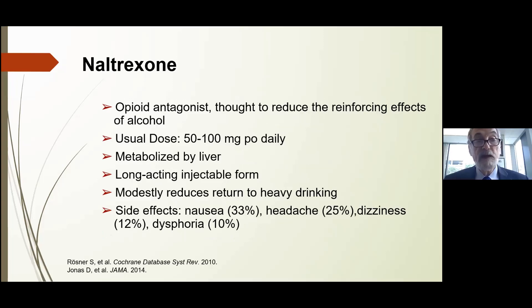Naltrexone is the third FDA-approved medication for alcohol use disorder — an opioid antagonist that reduces the reinforcing effects of alcohol. The usual dose is 50 to 100 mg per day. It's metabolized by the liver, but can still be used unless the patient has end-stage liver disease. There is a long-acting injectable form given once a month. There is modest reduction in return to heavy drinking. Side effects include nausea, headache, dizziness, and dysphoria, but most patients tolerate it reasonably well over time.